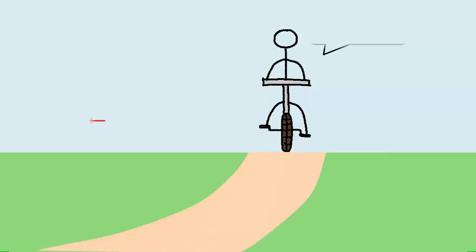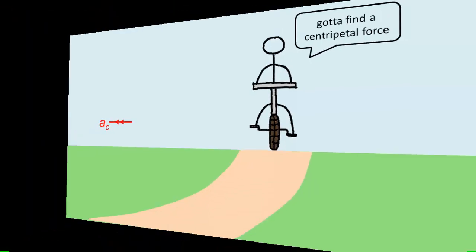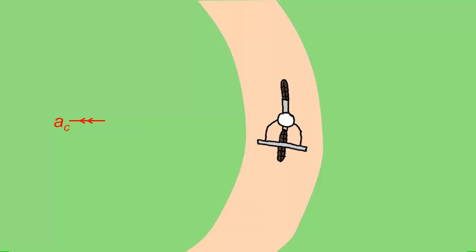To turn, a cyclist must find himself a centripetal force. He does this by turning the handlebar so that the frictional force acts in the centripetal direction.